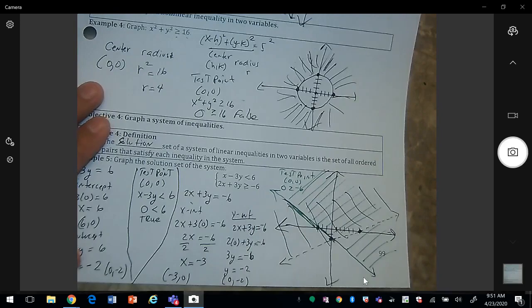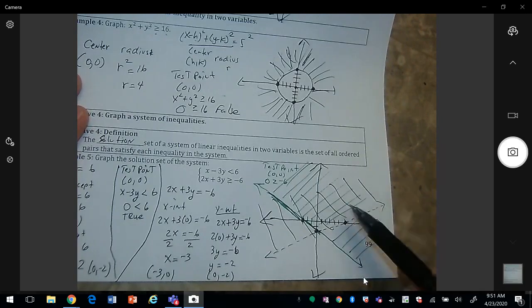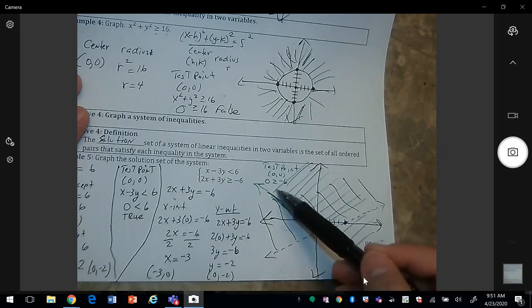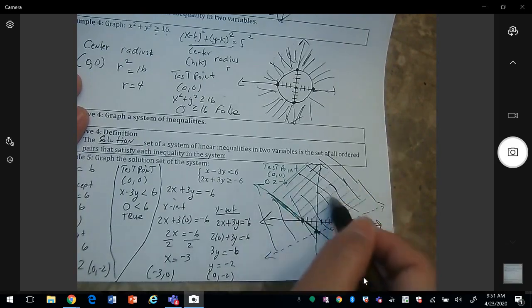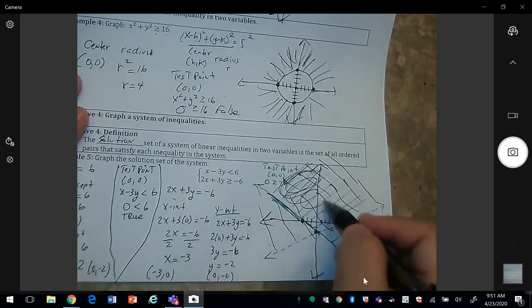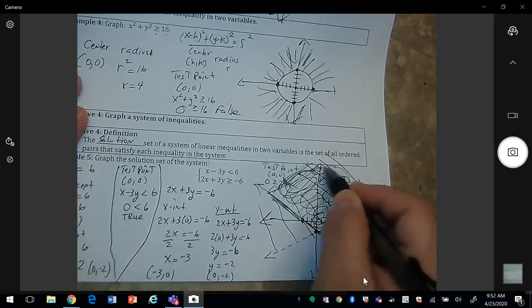So your solution for this problem is where you have both intersections. So notice here I have the lines going this way and then the lines that are going this way. So all of this area here is where it has both lines.